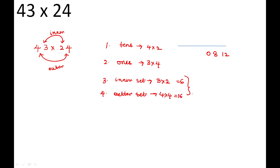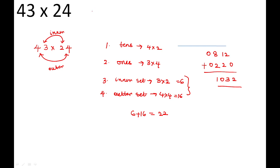Add the inner and outer products: 6 + 16 = 22. Now add 22 to the number formed by 08 and 12, leaving the ones place — write 2 in the tens place and 2 in the hundreds place. Adding: 8 + 2 = 10, carry 1; giving us 1032. So 43 × 24 = 1032. Using this method helps you calculate the multiplication of any two-digit numbers within seconds.